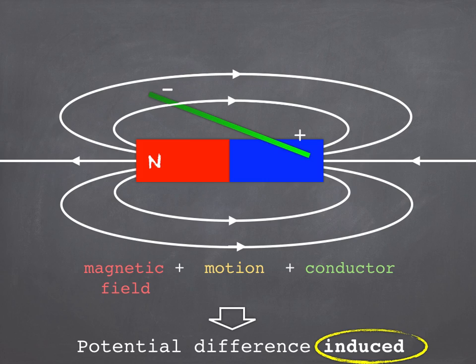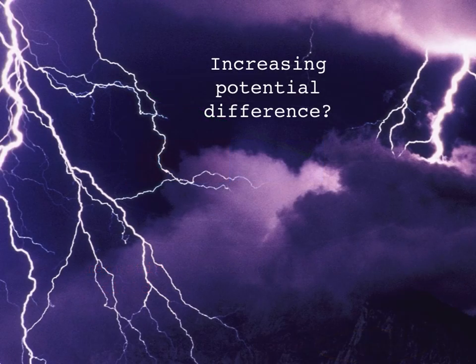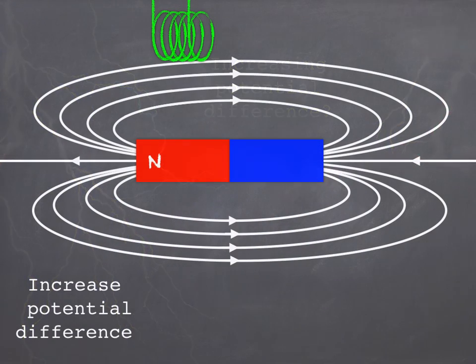Quite a common exam question is how would you increase the potential difference, and the key to it is fairly straightforward. There's three things you can do. You can see all of them in this animation here. Firstly, you can increase the strength of the magnetic field. Now you might remember that on a diagram of a magnetic field, the more flux lines you can see and the closer together those flux lines are, the stronger the field. So increasing the field will increase the PD.